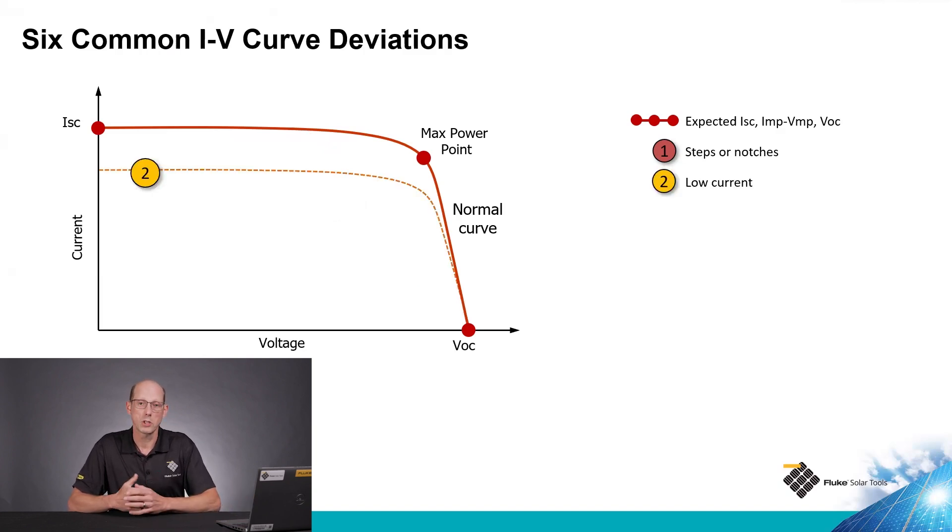The second deviation is low current. In this case, it could be even shading across the entire array, reducing the amount of light that's hitting the array. It could be something like degradation of the encapsulant in the module where it's becoming opaque and shading the cells, but it's a reduction of the entire current of the entire section of the array that we are testing.